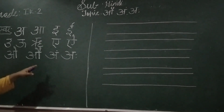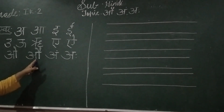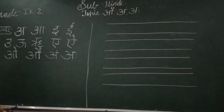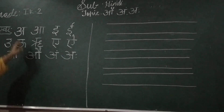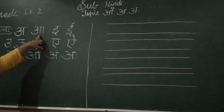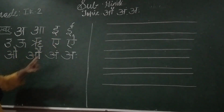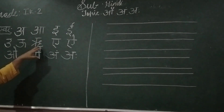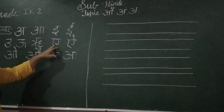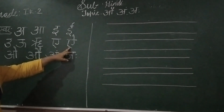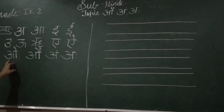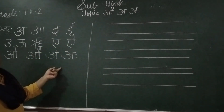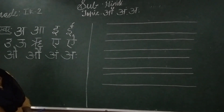Today we are going to learn Au, Am, Aha — three letters. A, A, I, I, U, U, U-ri, E, I, O, Au, Am, Aha.